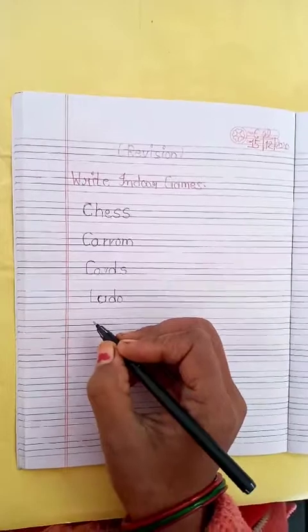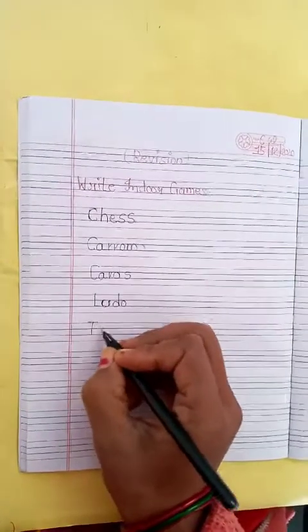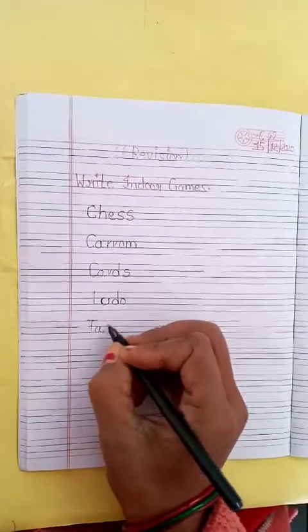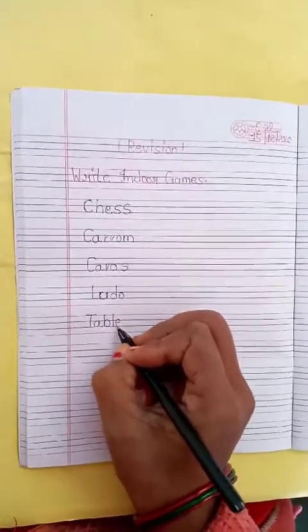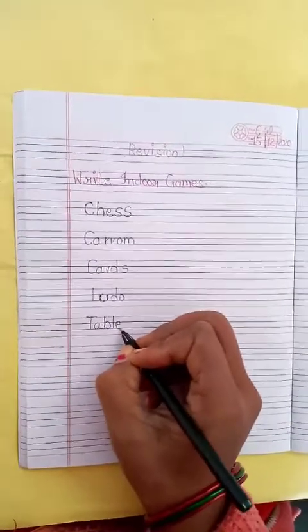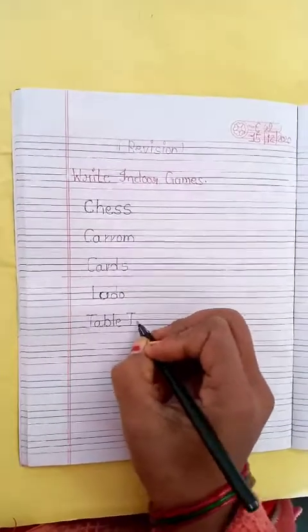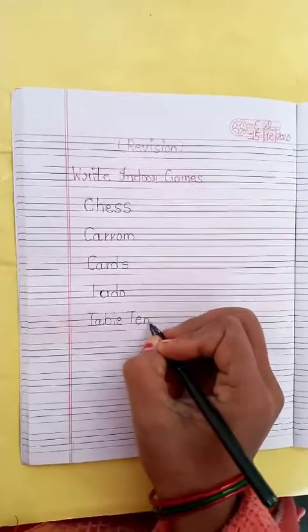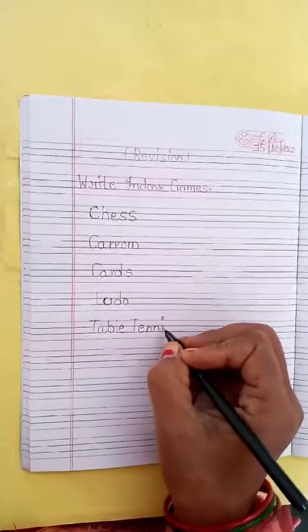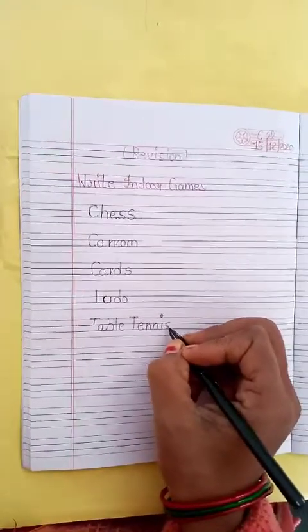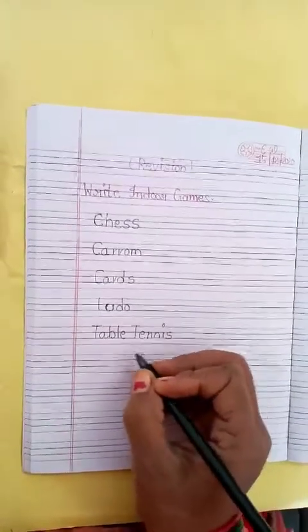Table — T-A-B-L-E. Table. Tennis — T-E-N-N-I-S. Tennis. Table Tennis.